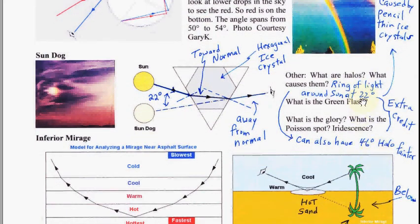The green flash and the glory, plus on spot, iridescence are all extra credit.